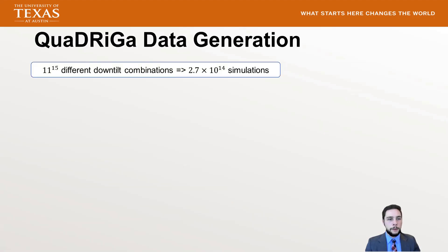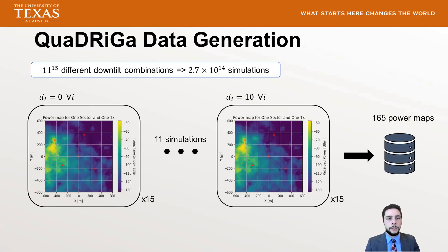Regarding the data: instead of simulating every possible combination, which would be a huge and expensive simulation campaign, we record data for each cell independently, run it for each of the different down tilts, and create a single database storing the power maps for each cell within each base station. We can then draw out the specific maps we want, scale them by the desired transmit power, and the result is a single power map specific to our situation.